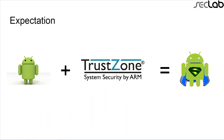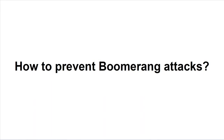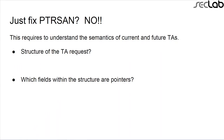How do we prevent boomerang attacks? An obvious fix is to fix PTRSAN since we could bypass it. But it's not easy: to fix PTRSAN you need to understand the semantics of each TA — how requests are processed and which fields within requests are pointers. This is not viable and cannot scale across multiple TAs, because TAs are produced by different vendors compared to the untrusted OS. So simply fixing PTRSAN is not a viable solution.